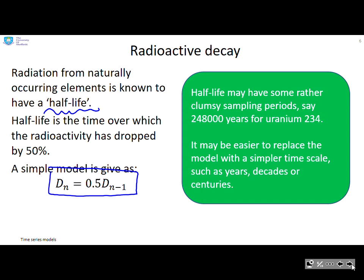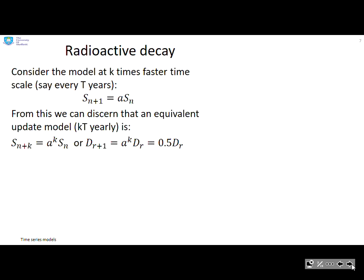Half-life may have some rather clumsy sampling periods. So for uranium-234, you can see the half-life here. I'm not being precise, but it's about 248,000 years. So it might be easier to replace this model with a simpler timescale, such as years, decades or centuries. How are we going to do that? So let's assume that a model exists of this form, an update model, which is a model where we're updating every t years rather than along the half-life.